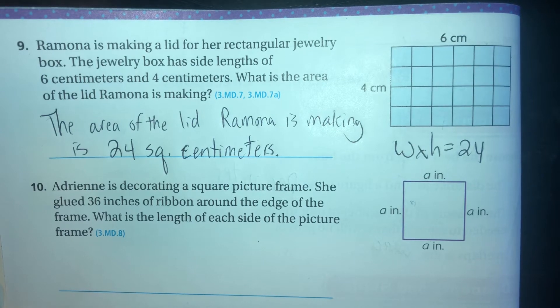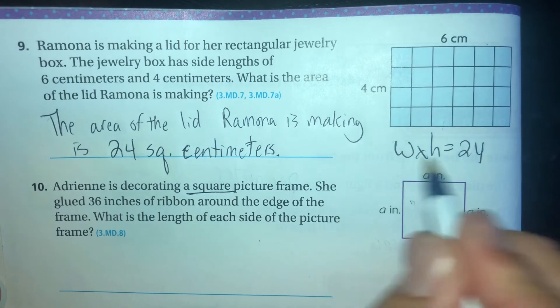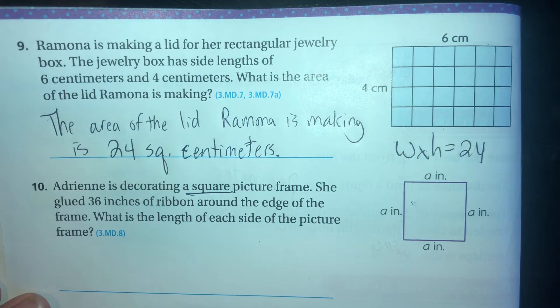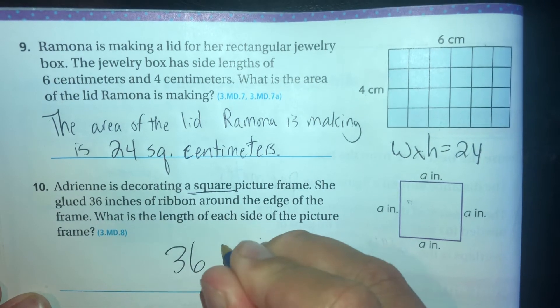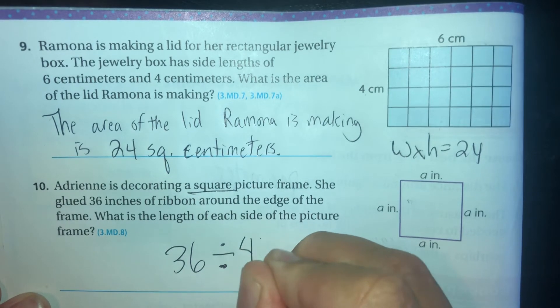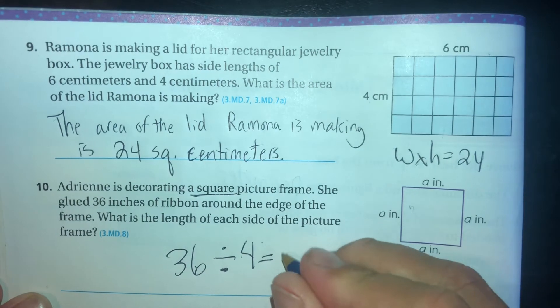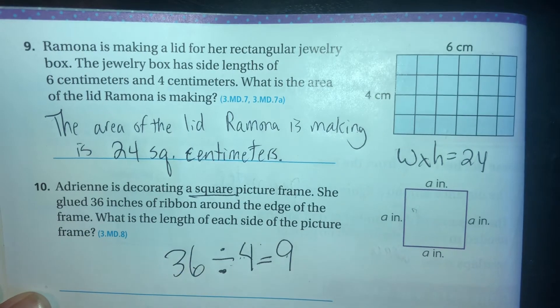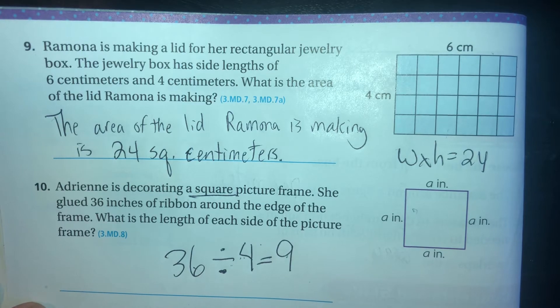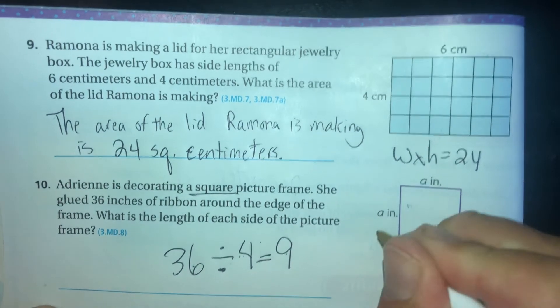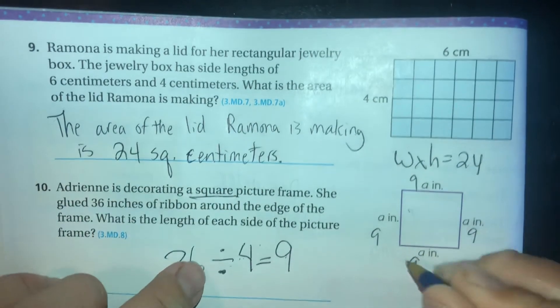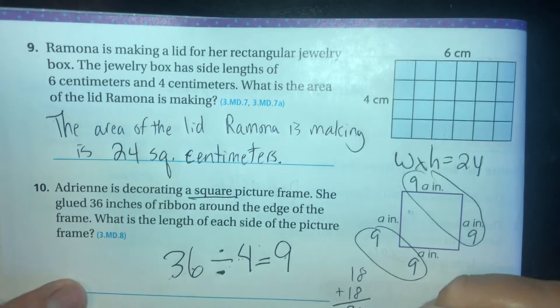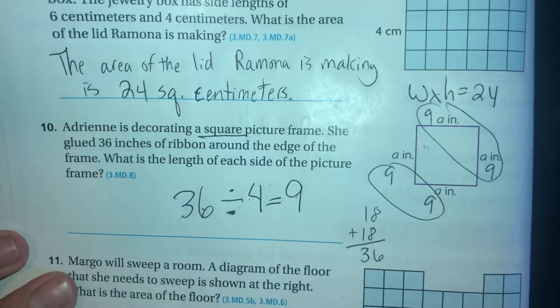Adrian is decorating a square picture frame, okay, so we know it's a square, so all the sides are going to be the same. She glued 36 inches of ribbon around the edge of the picture frame. What is the length of each side? So we have 36 all together, shared among four sides. Is - let's see, what times 4 equals 36? Six, no. Seven times four, no. Nine times four. Nine times four equals 36, so each side is nine. Now you can double check that. Let's see, 9, 9, 9, 9 - two sides would be 18, you have your other side 18, and that's going to give you 36. So you can kind of add to double check your work there.